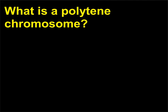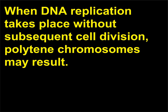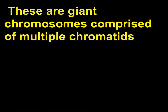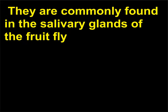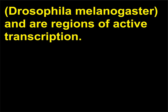What is a polytene chromosome? When DNA replication takes place without subsequent cell division, polytene chromosomes may result. These are giant chromosomes comprised of multiple chromatids — identical chromosome copies arranged together like strands of a large cable. They are commonly found in the salivary glands of the fruit fly, Drosophila melanogaster, and are regions of active transcription.